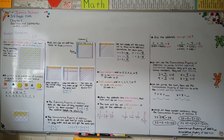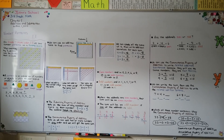Remember that a pattern is an ordered set of numbers or objects in which the order helps us predict what will come next. The identity property of addition tells us the sum of any number and 0 is that number — the addend keeps its identity. The commutative property of addition tells us we can add two or more numbers in any order and get the same sum. And remember, the sum will be odd if one of the addends is odd; if both addends are even, their sum will be even. I hope you have a great day — I'll see you next time!